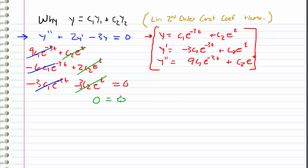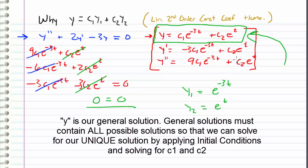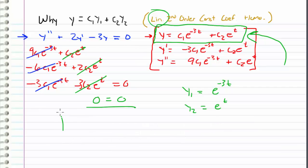This all cancels out, leaving zero equals zero. This shows that y — the linear combination of y1 and y2 — does in fact satisfy the differential equation. More importantly, by adding those two solutions together we can reach all possible solutions, because c1 and c2 are arbitrary. We don't know c1 or c2 until we apply initial conditions, but the point is that since both e^(−3t) and e^t were valid solutions, the only way to ensure all solutions can be reached is by taking their linear combination as our solution — and that's the case for any linear differential equation.